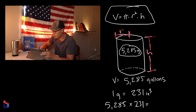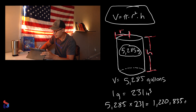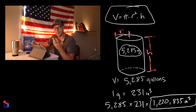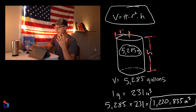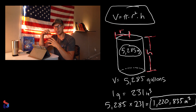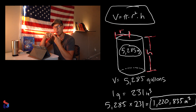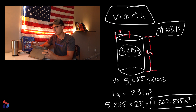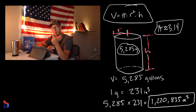So 5,285 times 231 gives us 1,220,835 cubic inches — that's your volume in cubic inches. Now I'm going to pick a random height value, because otherwise we literally can't find the dimensions of a cylinder tank without another given value. We know pi equals approximately 3.14. We know the volume, we know pi, so now we just need to know either the height or the radius.